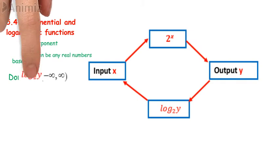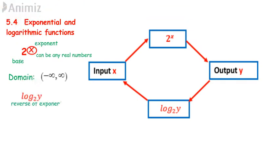Logarithmic functions is a reverse of exponential function. Exponential function concerns about the output. If the input is 3, what is the output for 2 raised to the power of 3? The answer is 8.